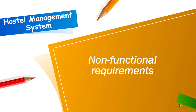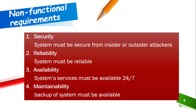Next, we have non-functional requirements. Non-functional requirements are basically the requirements that include security, reliability, availability, and maintainability. The first non-functional requirement is security — the system must be secure from inside or outside attackers, hackers, or intruders. There must be no bug, no ambiguity in the code, and no loophole in the system, so that no unauthorized user from inside or outside can access and retrieve details.